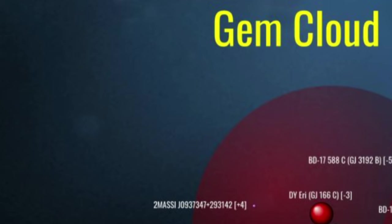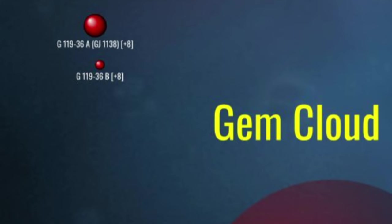West and four parsecs north, we arrive at the red dwarf binary, Gliese 1138, about which I can learn nothing.